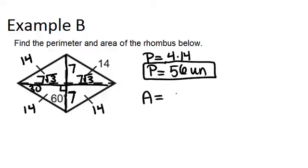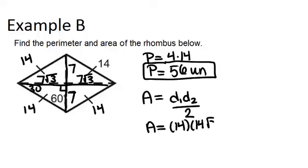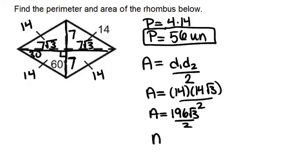Since the area is diagonal 1 times diagonal 2 divided by 2, my area in this case will be 14 times 14 root 3 divided by 2. That is 196 root 3 divided by 2, which is 98 root 3 units squared.